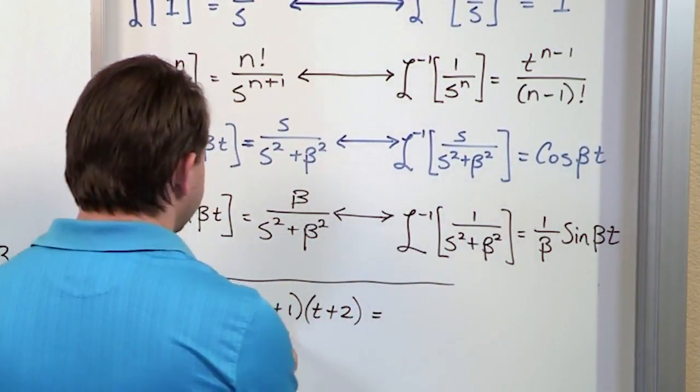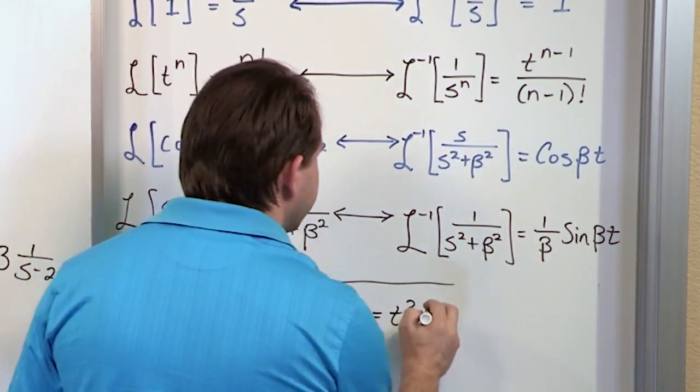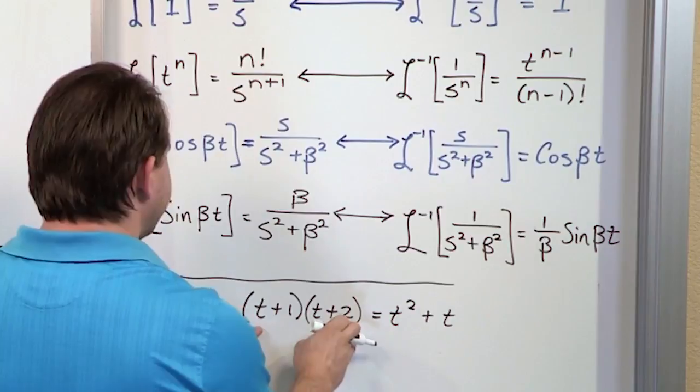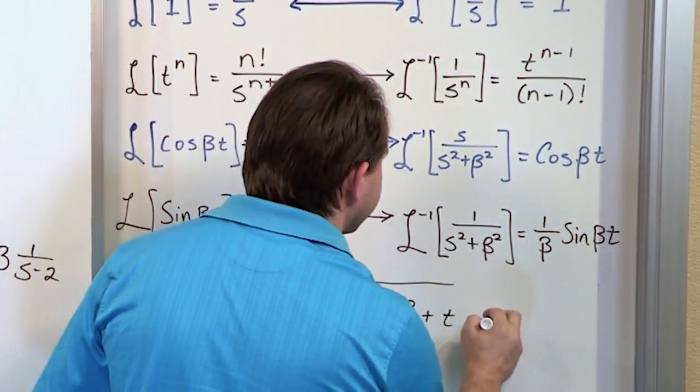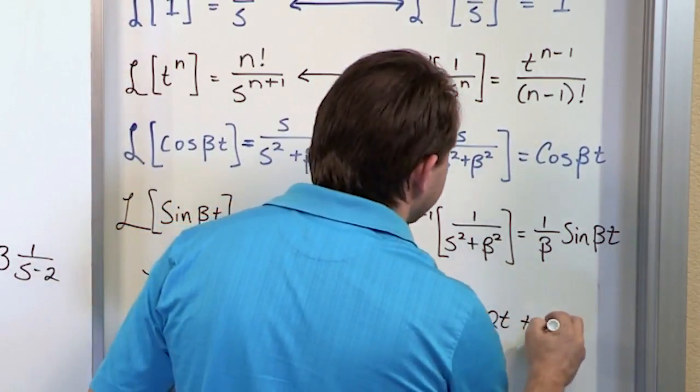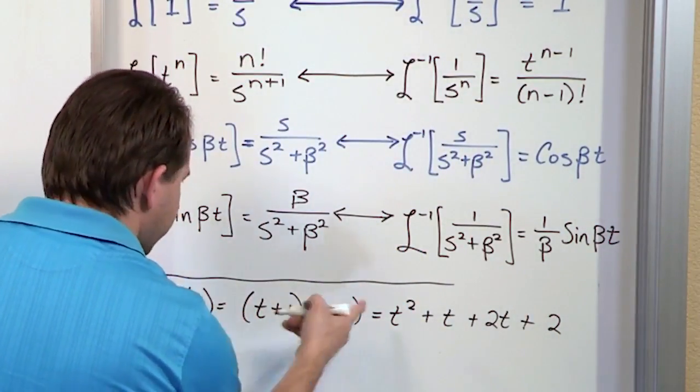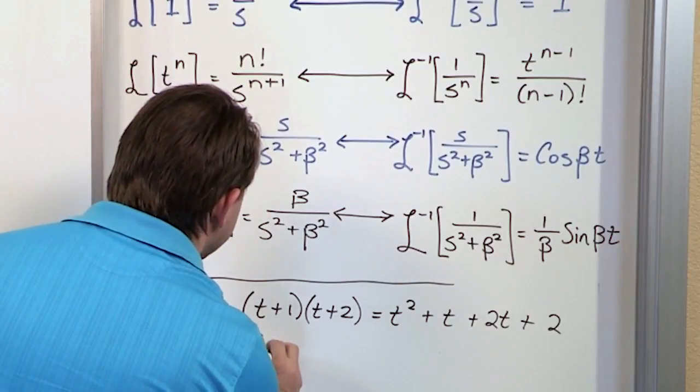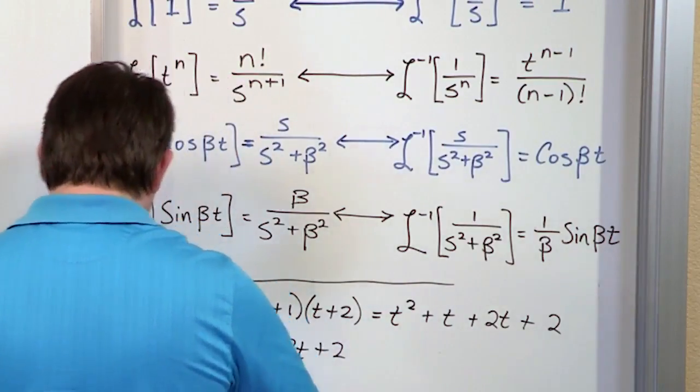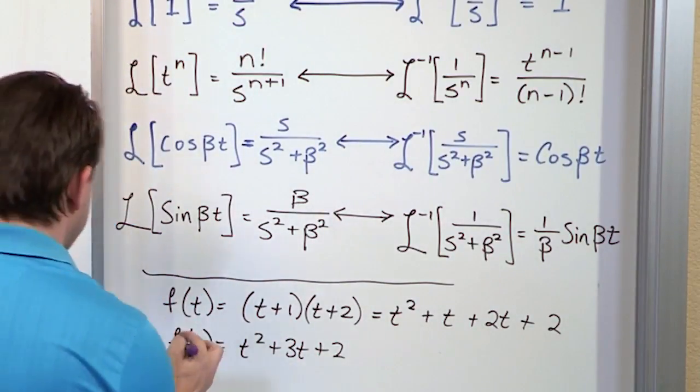So what you're going to have is t times t is t squared. The inside terms will give you t. The outside terms will give you 2t. And then the last terms, 2 times 1, would give me 2. So f of t really, when you rewrite it, is t squared plus 3t plus 2. And what we seek to do is take the Laplace transform of that.